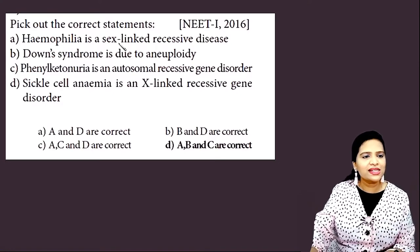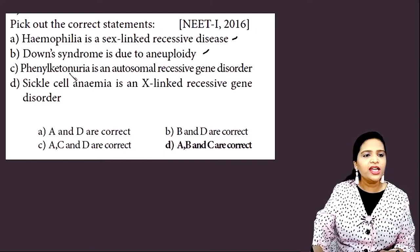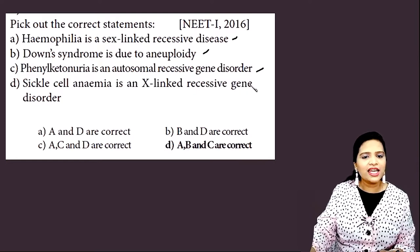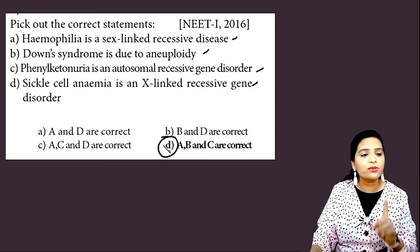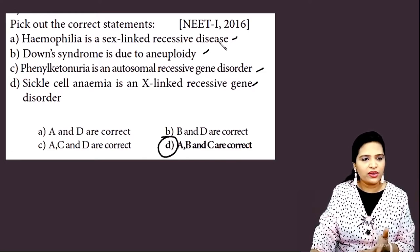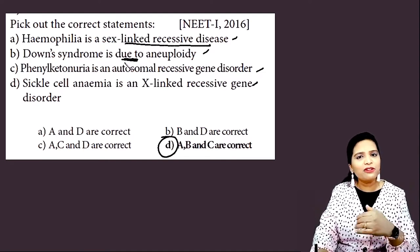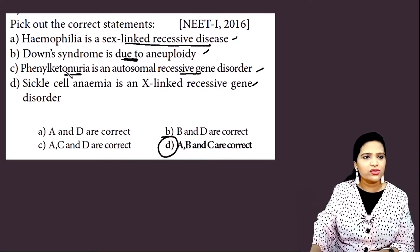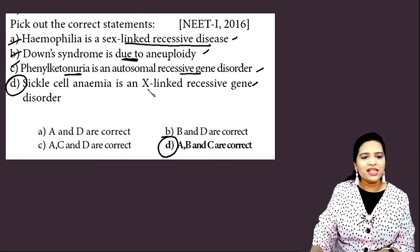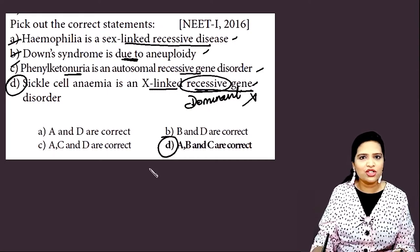A NEET 2016 question: pick the correct statements — hemophilia is a sex-linked recessive disease; down syndrome is due to aneuploidy; phenylketonuria is an autosomal recessive gene disorder; sickle cell anemia is an X-linked recessive gene disorder. The answer is options A, B, and C — that is option D. Sickle cell anemia is not X-linked recessive; it is an autosomal dominant disorder, so that statement is incorrect.